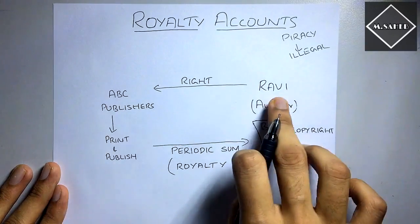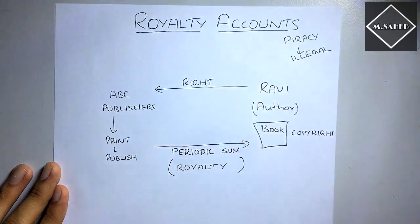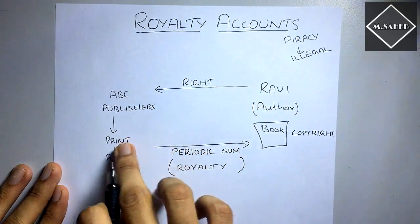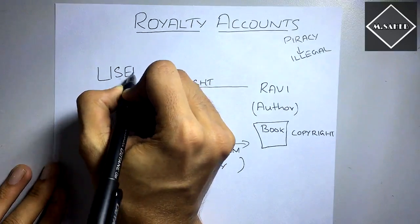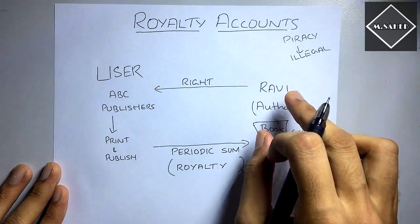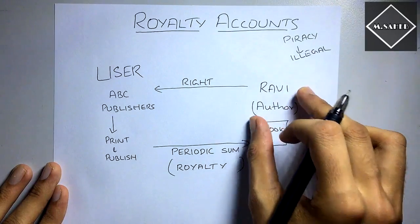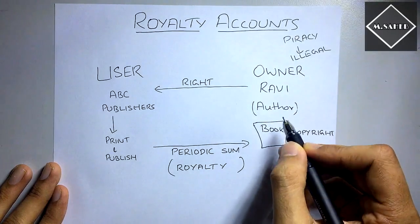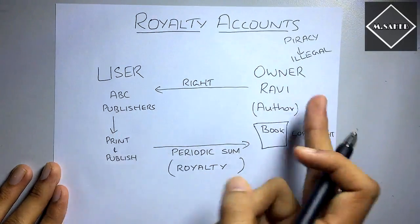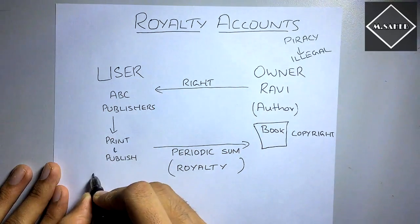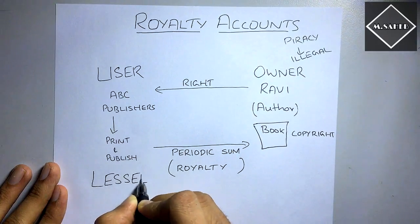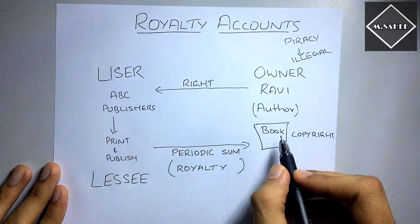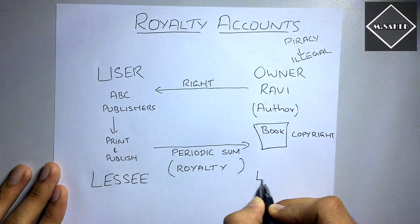So now who is ABC Publishers and who is Ravi in this chapter? ABC Publishers is using the right of Ravi, so they are the user — user of the right. And Ravi is the owner of the right; he wrote that book. There is an agreement between the user and the owner. The user is called lessee in this chapter, because he is using the right. And the owner of the asset or the property or the content — the owner is called lessor.